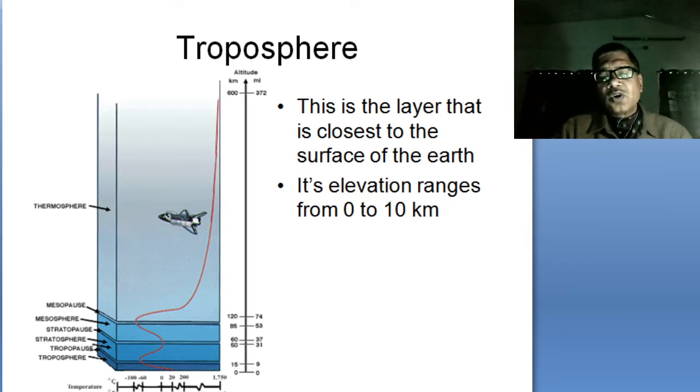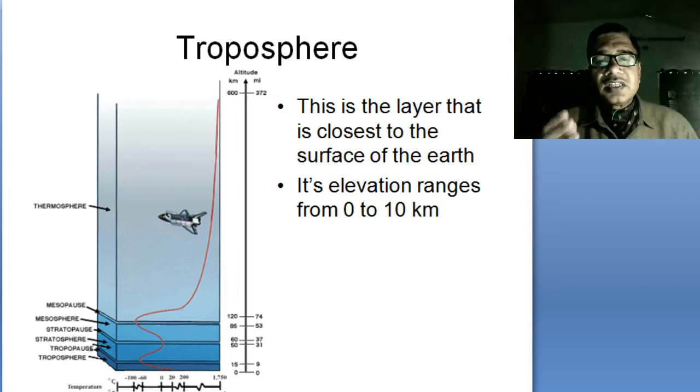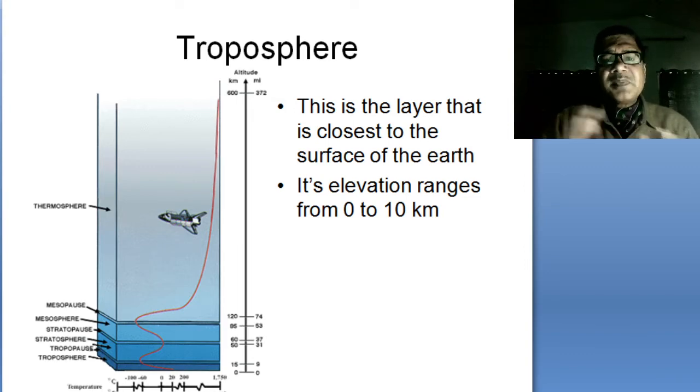Now what could be the possible reasons? One of the prime reasons is the temperature. At the equatorial areas, the places near the equator, the temperature is high. So what happens is the air gets expanded. It expands. It becomes rarefied near the equator. So it copies more space.